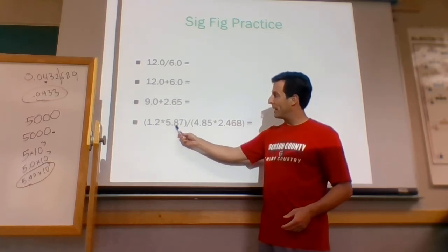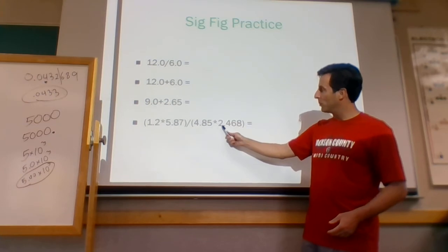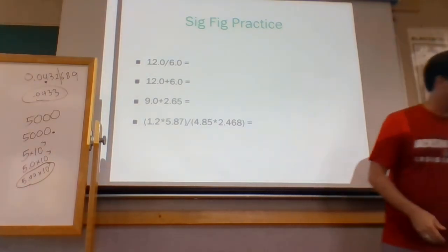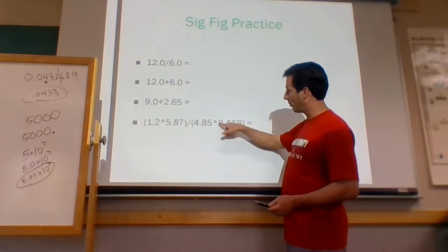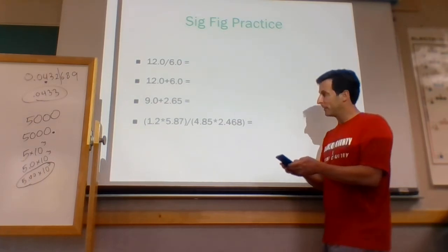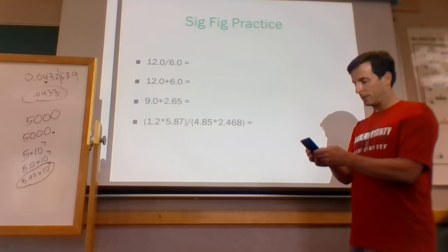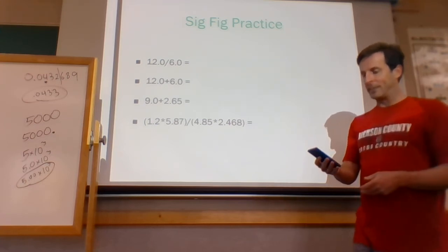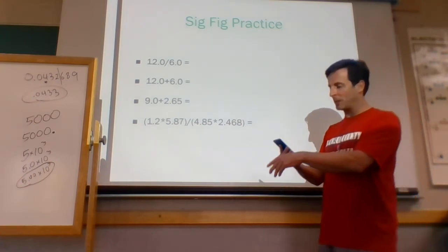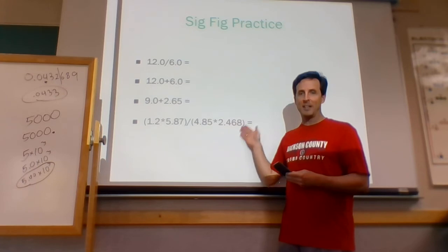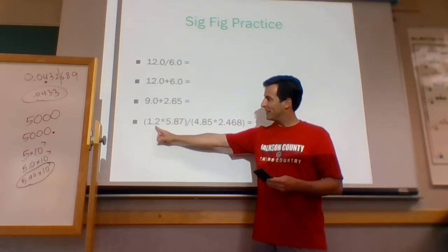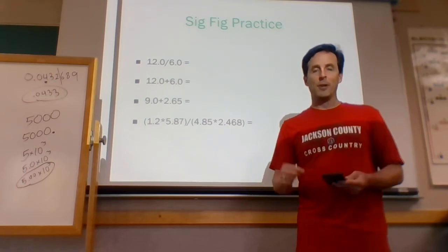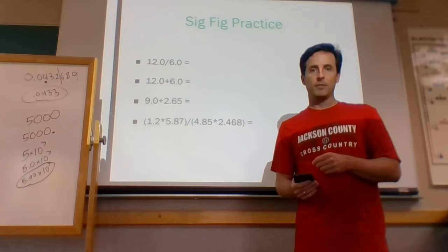For 1.2 × 5.87 ÷ 4.85 × 2.468, punch it into your calculator — be careful about parentheses. I got 0.58848 and more digits. Everything here is multiplying and dividing, so the one with the fewest sig figs determines the answer. The first number, 1.2, only had 2 sig figs, so my answer needs to be rounded to 2 sig figs. I would write down 0.59. Whether you put the leading zero in front of the decimal or not is just a personal choice.